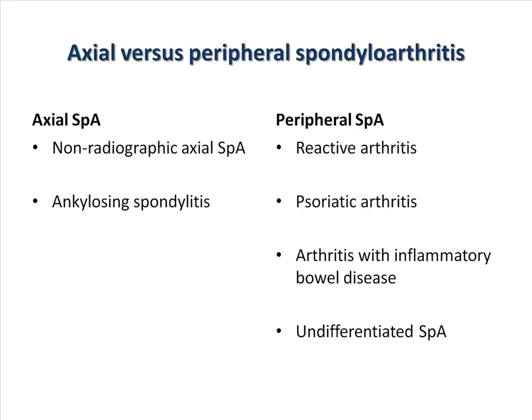Patients with spondyloarthritis can be divided into two broad categories: patients with predominant axial symptoms or patients with predominant peripheral symptoms. For patients with axial spondyloarthritis, the typical diagnosis is that of ankylosing spondylitis. Under the group of patients with predominant peripheral joint arthritis, these would include diseases such as reactive arthritis, psoriatic arthritis, arthritis associated with inflammatory bowel diseases, as well as undifferentiated spondyloarthritis.